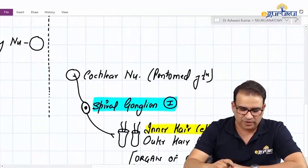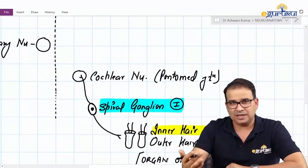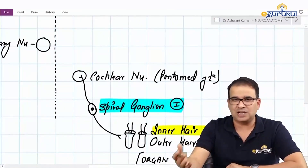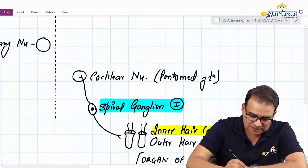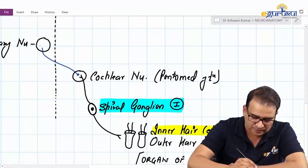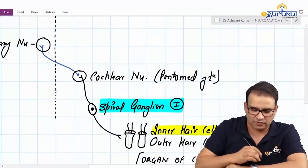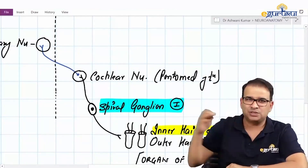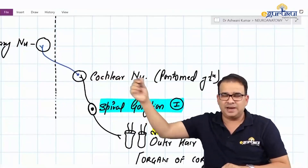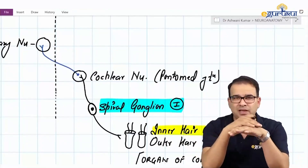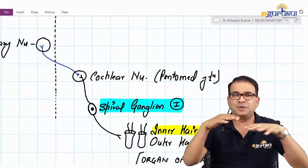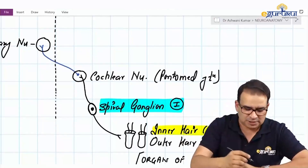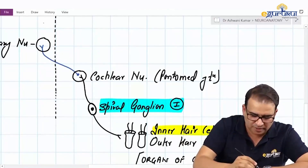The cochlear nucleus is the point from where the second-order neuron begins. The second-order neuron starts from the cochlear nucleus, decussates to the other side, and reaches the superior olivary nucleus. These decussating second-order neurons, crossing from right to left and left to right in the middle part of the pons, form a shape like a trapezium, and that is why it is called the trapezoid body.